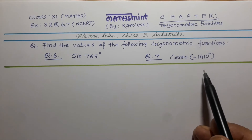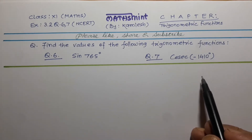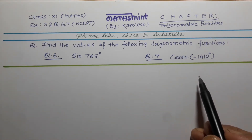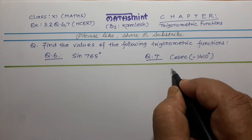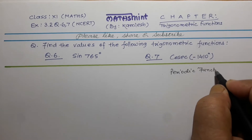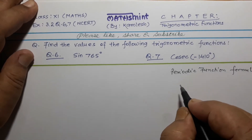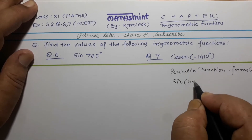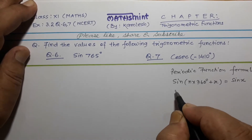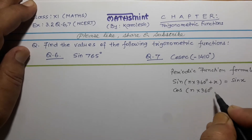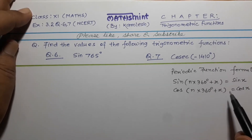As we know, in class 10 we got the values of the different trigonometric functions for angles 0°, 30°, 45°, 60°, and 90°. But now any degree of angles of trigonometric ratios can be asked. For the solution of such questions we have the periodic functions formula. According to the periodic function formula: sin(n × 360° + x) = sin x. Likewise, cos(n × 360° + x) = cos x. Other trigonometric functions are also applicable for this formula.